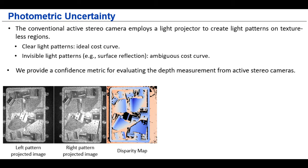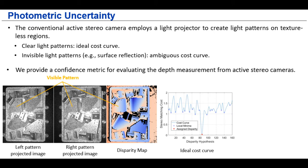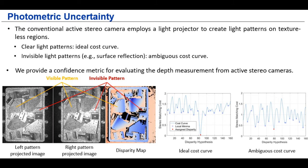For the active stereo cameras, because it actively projects the light patterns, the stereo matching on the texture-less area becomes relatively easy with this ideal cost curve. However, when there is specular reflection, the light patterns become invisible and the cost curve becomes ambiguous. And therefore, for the photometric uncertainty in our work, we basically examine these cost curves and estimate a confidence score for this curve. And this metric can be used for evaluating the depth measurement for different active stereo cameras.